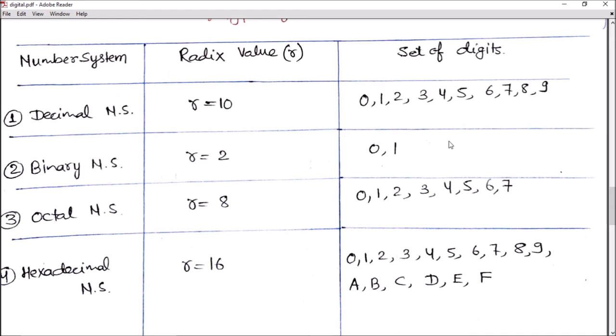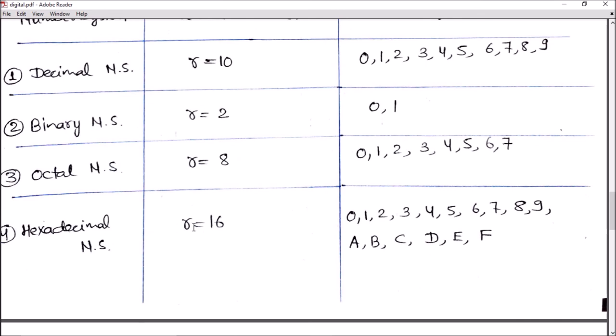In octal number system, we have radix or base r equal to 8, so we have 8 symbols starting from 0 to 7. In hexadecimal number system, we have base 16, therefore we have 16 symbols starting from 0 to 9, and for 10, 11, 12, 13, 14, 15, we use symbols A, B, C, D, E, F. A is for 10, B for 11, C for 12, D for 13, E for 14, and F for 15.